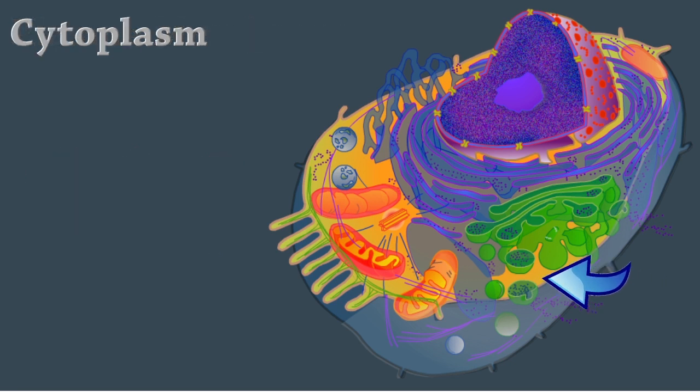The cytoplasm holds all of the organelles, which are specialized subunits within a cell. There are a number of different organelles, and each one performs a specific task.